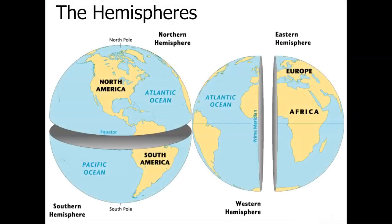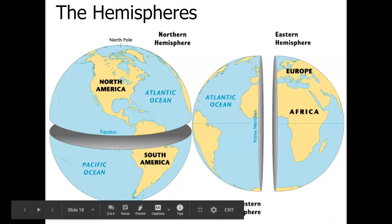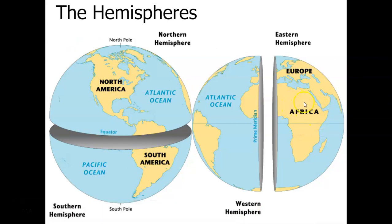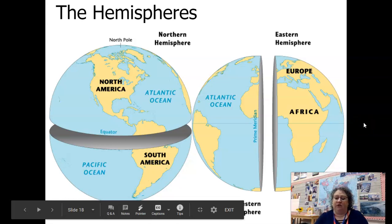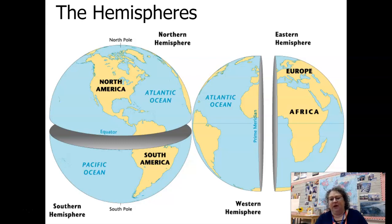Our earth is divided into hemispheres, and these are terms we need to know when talking about northern and southern hemispheres. We're going to spend a lot of our year talking about the eastern hemisphere, focusing a lot on Europe and Africa, because our course goes up until 1500 — which means the Americas aren't discovered by Columbus until 1492. We will talk about the Vikings and how Leif Erikson actually came to the Americas first, landing in Canada, though he kept quiet about it.